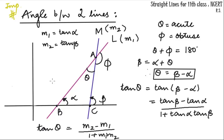If the slope of one line is m1 = tan α and the slope of the other is m2 = tan β, based on the angles they make with the positive x-axis, we apply the exterior angle property in triangle ABC. This gives us alpha + theta = beta, so theta = beta − alpha. Also, from a linear pair, theta + phi = 180°. Finding one gives the other automatically, so we focus on finding the acute angle. We get tan θ = tan(β − α).